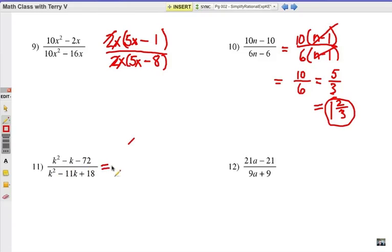Number 11 is a trinomial, so we're going to factor it as a product of binomials. The k would be the first part of each binomial. I need to figure out my signs. There's going to be a plus and a minus because of that negative third term, and I want a left over negative 1k middle term.